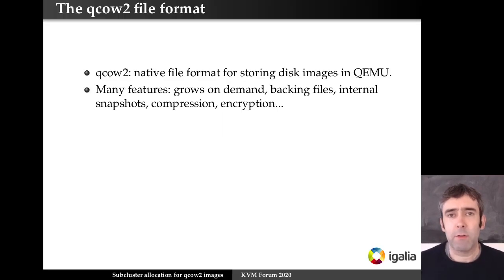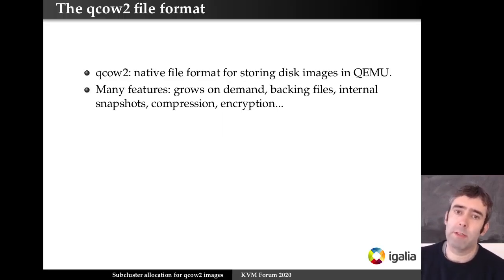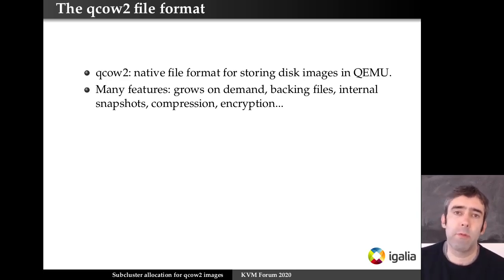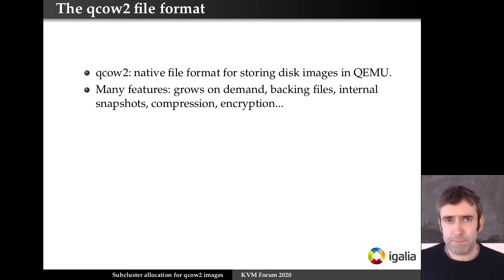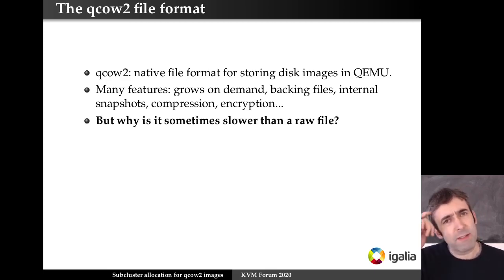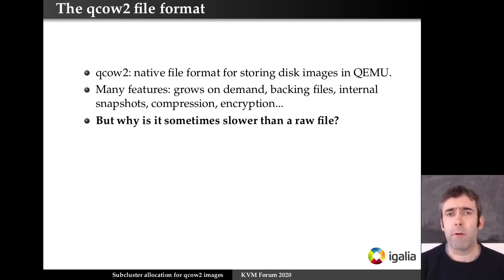This is related to the QCow2 file format. As you know, this is the native file format used by QEMU and it supports many features such as encryption, compression, backing files, etc. But the question I'm going to try to answer today is why is it that sometimes it is slower than a RAW file?